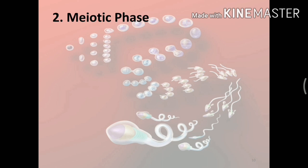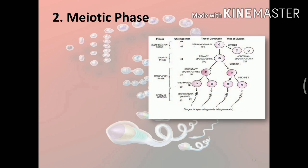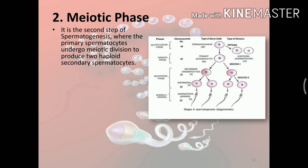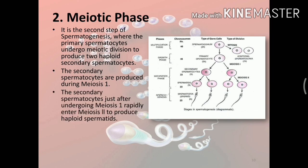Next is the meiotic phase — the second step of spermatogenesis, where the primary spermatocytes undergo meiotic division to produce two haploid secondary spermatocytes. The secondary spermatocytes are produced during meiosis 1. Just after undergoing meiosis 1, secondary spermatocytes rapidly enter meiosis 2 to produce haploid spermatids. This is the reason why in histological slides we are not able to see the secondary spermatocytes. Meiotic division, or reductional division, is the division in which the chromosome number gets halved.